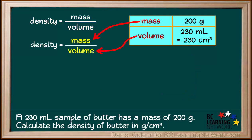Now we can substitute the values for mass and volume into our equation, density equals mass divided by volume. We substitute 200 grams in for mass, and 230 cubic centimeters in for volume.